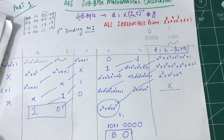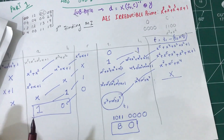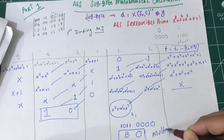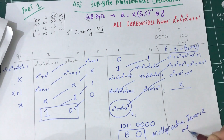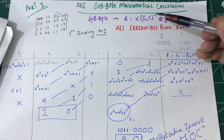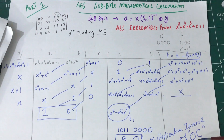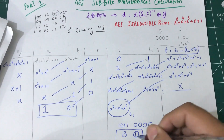So the first step of the SubBytes calculation is finding the multiplicative inverse. I hope you're understanding and enjoying this. The first step is: the multiplicative inverse of 0x0C is 0xB0.